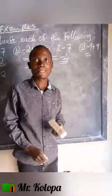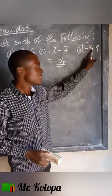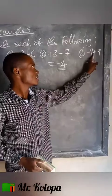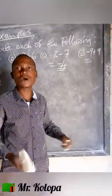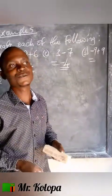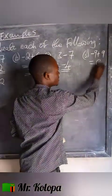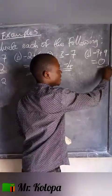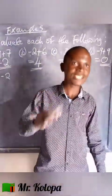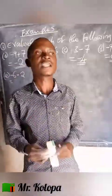Let's look at D. If you look at D, are the signs the same or different? The signs are different, so we are going to subtract. When you subtract 9 minus 9, you get 0. So you write 0. Zero has no sign — zero is neutral. Just write 0 without any sign.